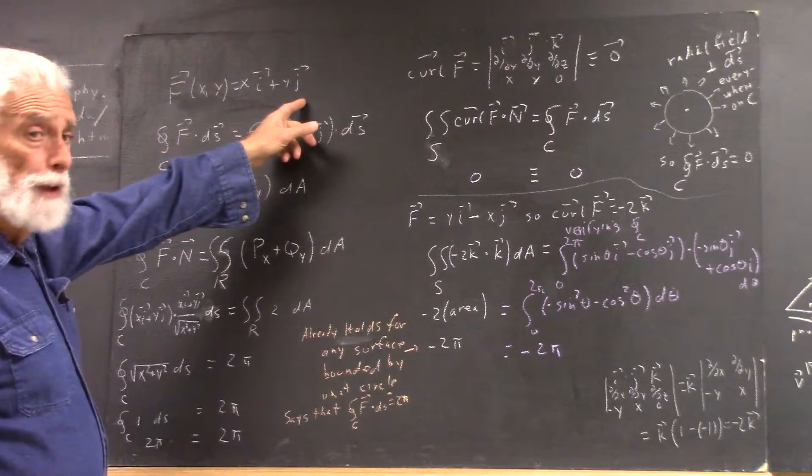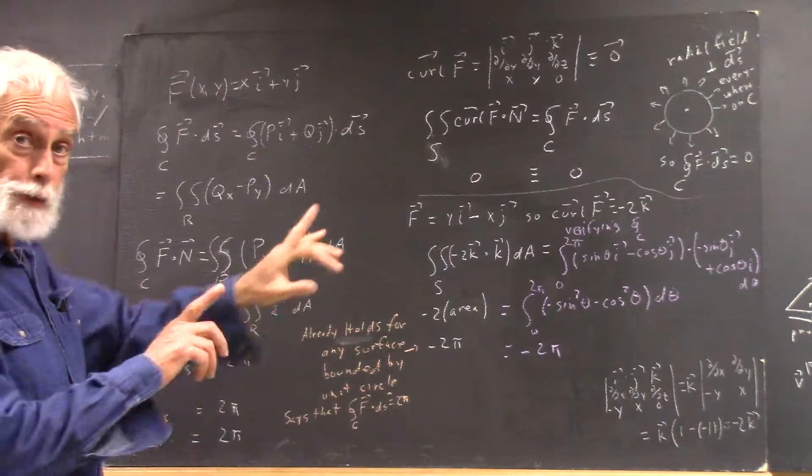Let's let f(x,y) equal xi plus yj. Now that's just a radial field.